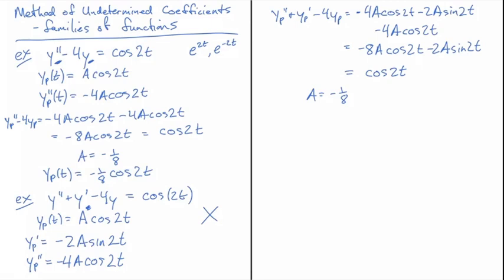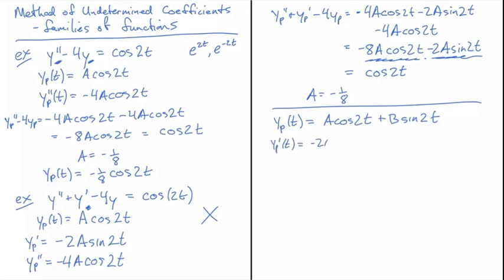So what we're going to do is we're going to fix that, and then try again with a yp of t, and now I'm going to include an A cosine 2t, and we'll be able to match that to the cosine term that emerges, plus B sine 2t, and that one we're going to be able to match to the sine term that emerges. So now we have to do some calculations, so we take a first derivative, and we get minus 2A sine 2t plus 2B cosine 2t.